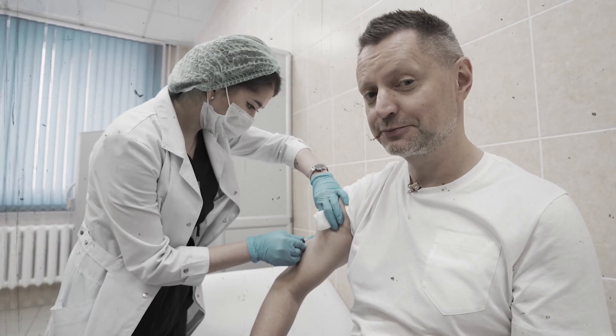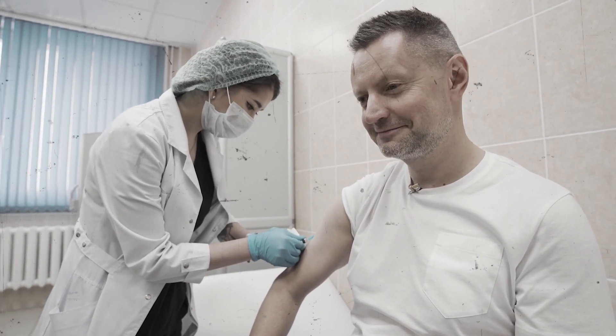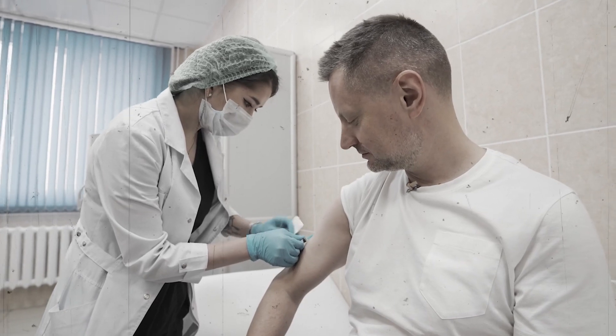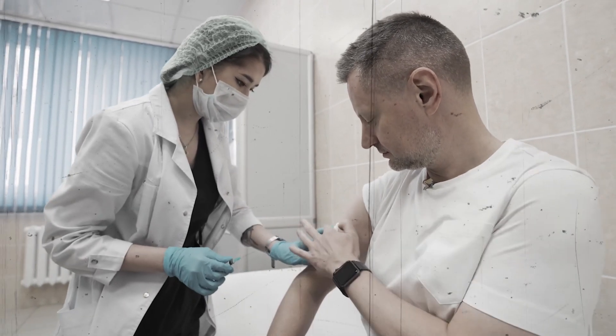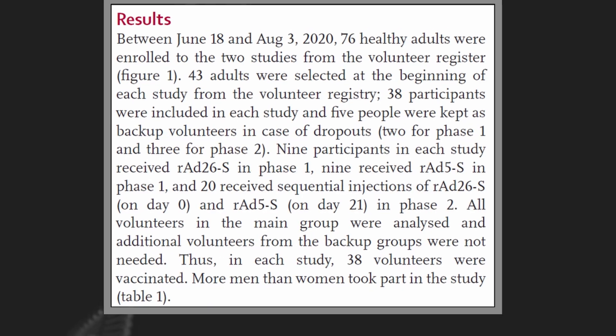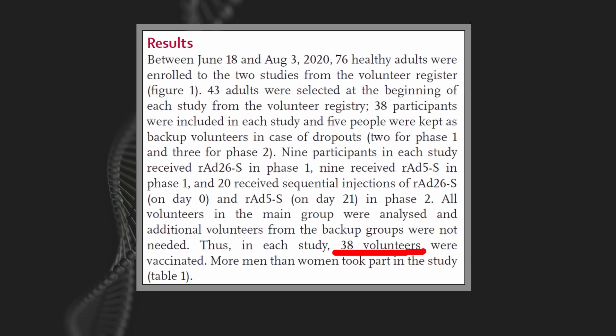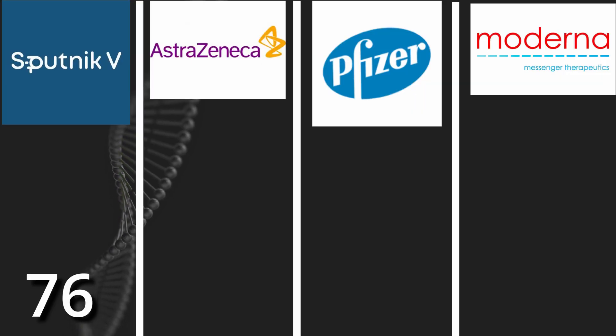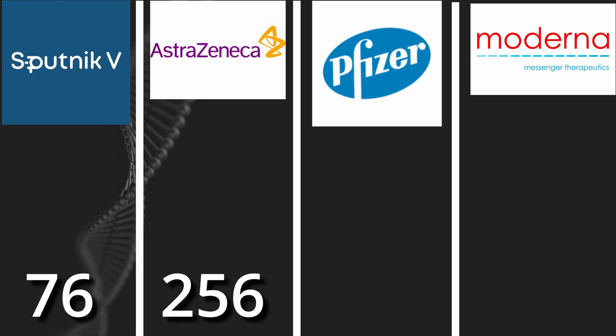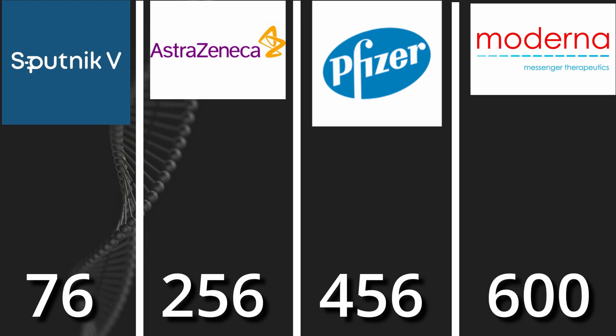The Russian Ministry of Health was not even stopped by the fact that phase 1 and 2 were conducted on a very small number of volunteers before the vaccine was registered. Two groups of 38 people each. That's negligible. For comparison, Oxford vaccine in phase 2 was tested with 256 volunteers, Pfizer with 456, Moderna with 600.